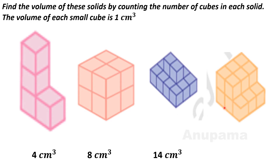Let us take another shape. Here there are also two levels. On the first level we can see one, two, three — and here also one, two, three — meaning three threes are nine cubes on the first level. On the second level there are one, two, three, four, five, six — six cubes. Nine plus six equals 15, so the volume of this shape is 15 centimeter cube.